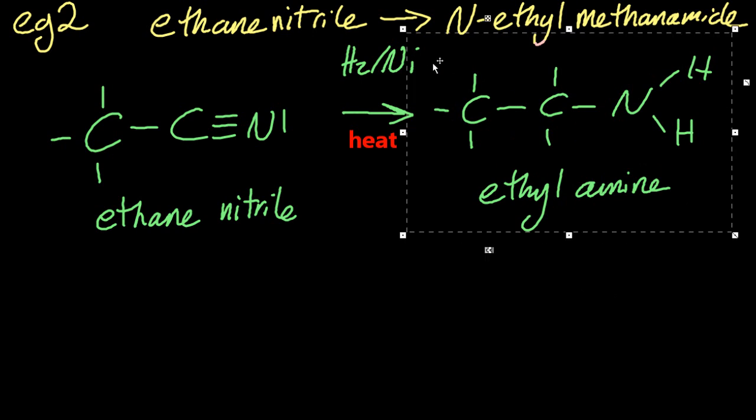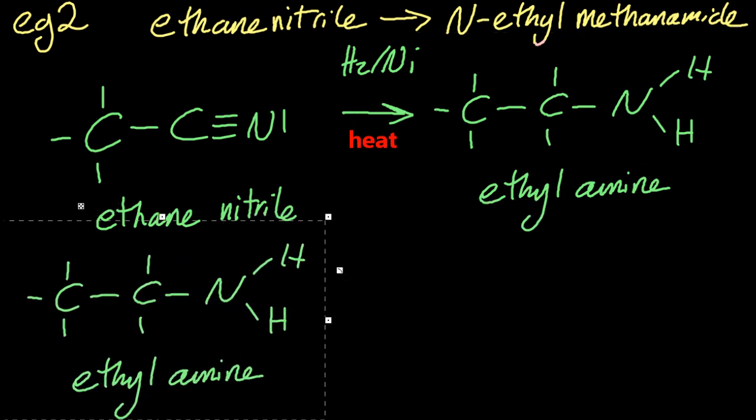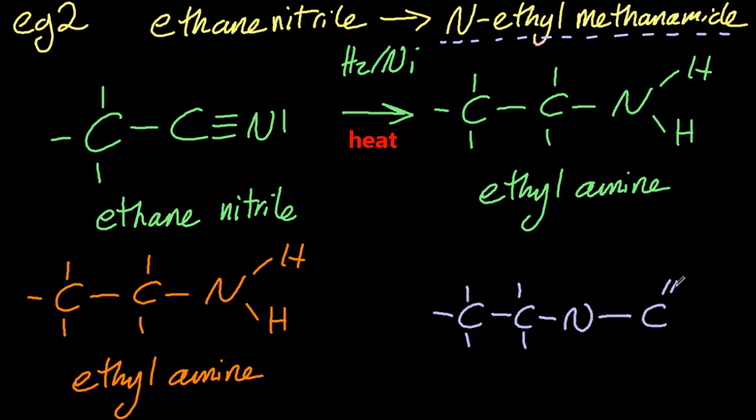Now take my ethylamine, change it orange. Let's draw out the final product, N-ethyl methanamide, and see if we can work out how to turn one into the other. There's an ethyl group on the N. Now I've made methanamide there, smashing, that's the amide linkage which you've all forgotten because after teaching it for 20 years no one seems to remember it. That's okay, I'm still here.